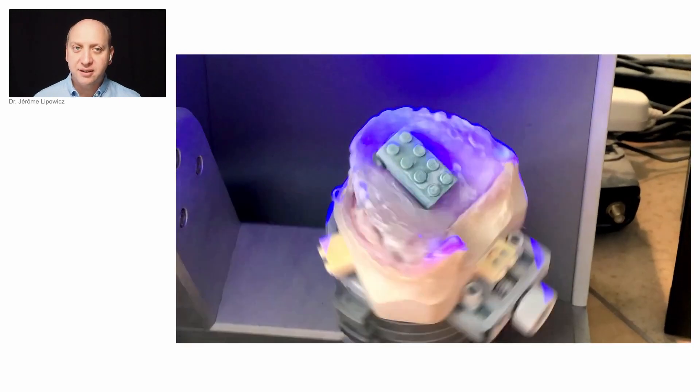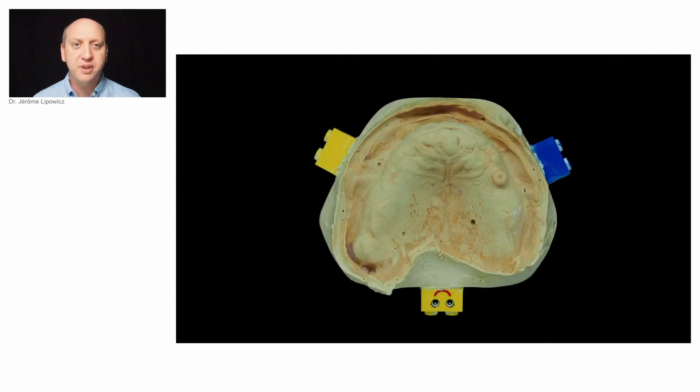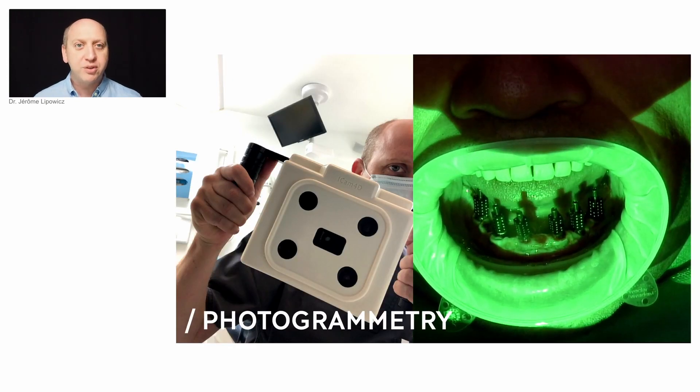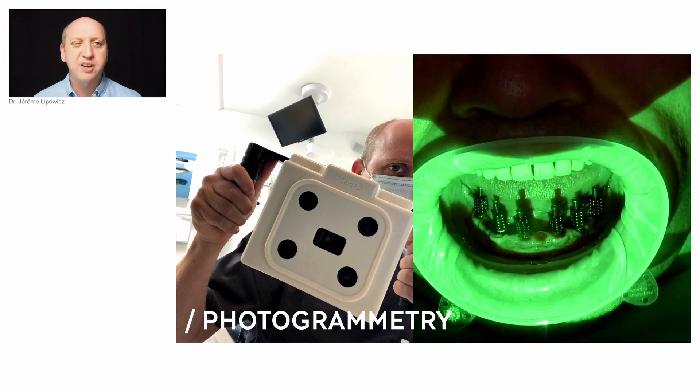And then the model is scanned without removing the relined denture. Then we can proceed to the second desktop scanning. This time, only the model with the three remaining Lego bricks on the base. We also decided to use the photogrammetry system.